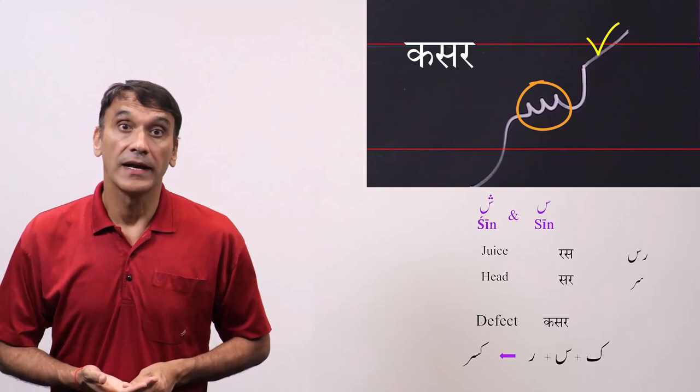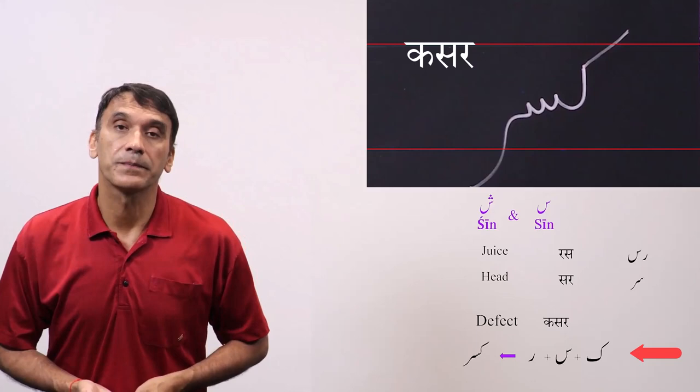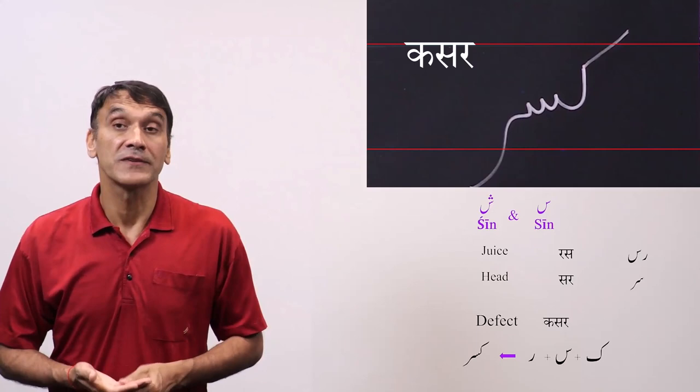So the medial form of seen sound and then final form of the re, the re sound. So the first letter calf is in its initial position. You can ignore it for now because we haven't learned it yet.